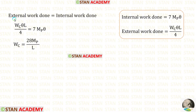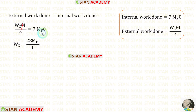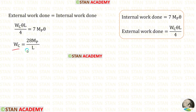Now let us equate the external work done and the internal work done. We eliminate θ and bring L/4 to the other side. 4 × 7 = 28. So in the column mechanism, Wc = 28MP/L.